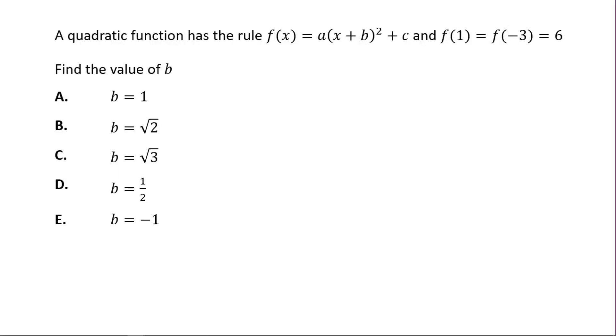Welcome. So we're going to answer this multiple choice question before us. It says a quadratic function has this rule right here, and f of one is equal to f of negative three, which is equal to six, and we need to find the value of b.